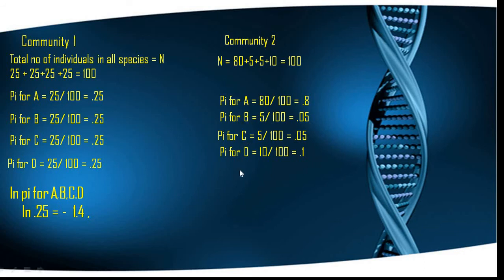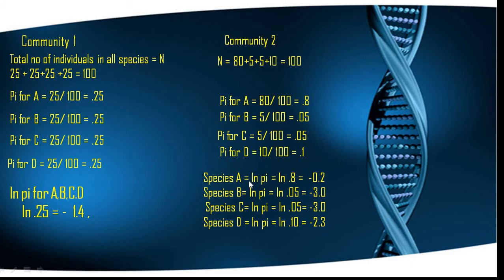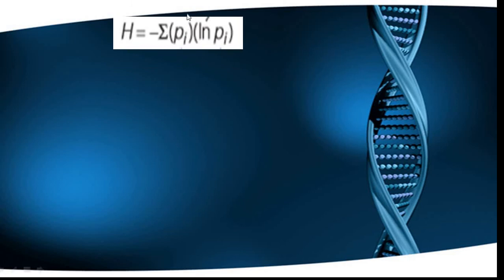The ln(pi) values for Community 2, as given in the question, are: for species A, ln(pi) = −0.22; for species B, ln(pi) = −3.0; for species C, ln(pi) = −2.3; and for species D, ln(pi) = −2.3. The formula states H = −Σ(pi × ln(pi)), so we use the pi and ln(pi) values we have calculated.